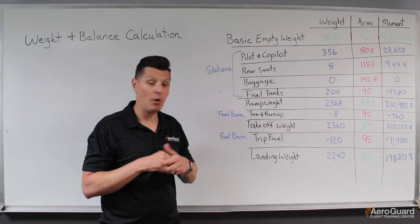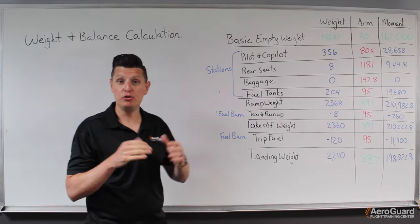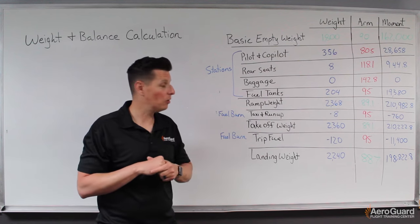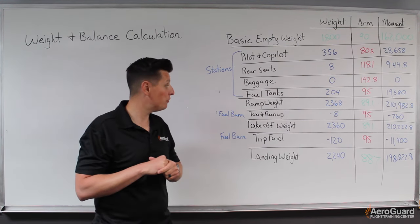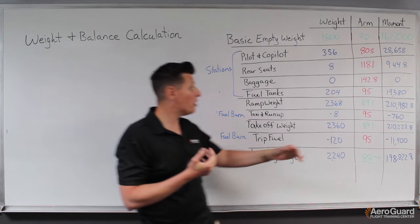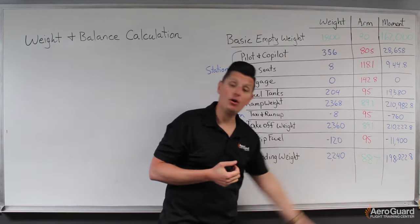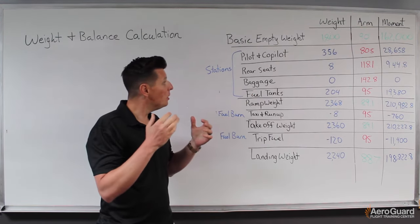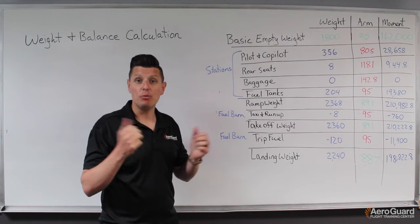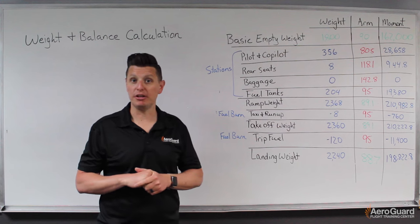we want to check what we call the CG envelope or the CG range for our aircraft. In section six of the pilot's operating handbook, we'd usually see a table or graph that identifies the CG range for the aircraft. We'd want to make sure that from takeoff to landing, we stay within that CG range or envelope. In this case, we're good to go, so we'd be fine for this particular flight.